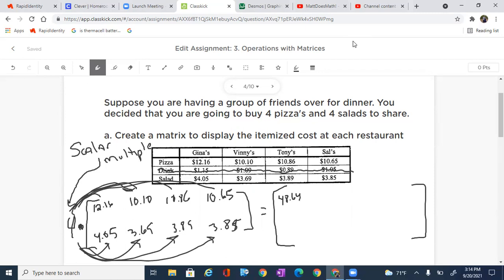We then do four times 10, which is $40.40. We do four times 10.86, which is $43.44.